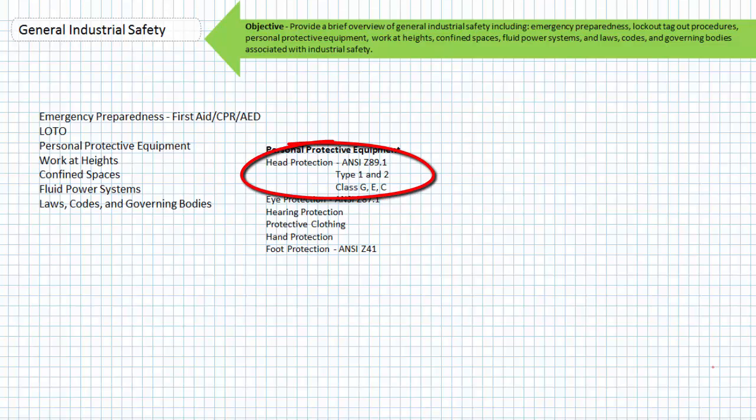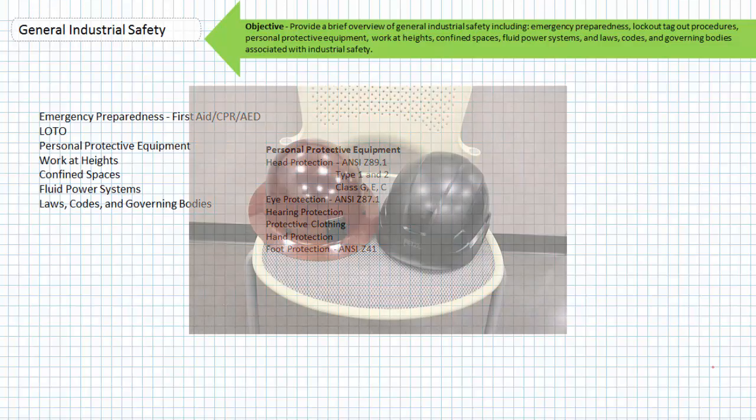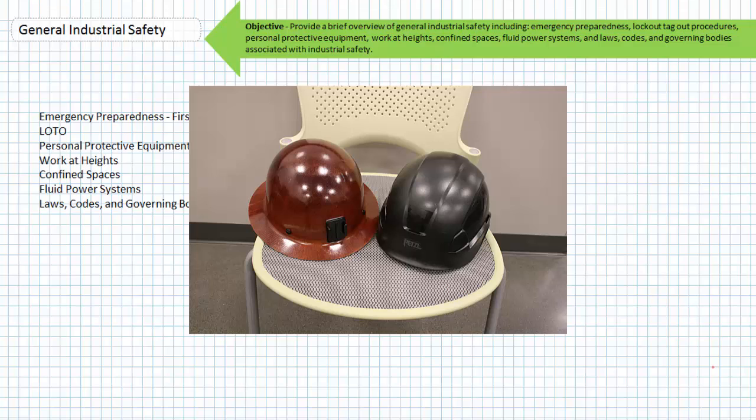Head protection. The hard hat's obvious purpose is to protect an individual from head injuries, notably dropped objects. The number one safety incident involving wind turbines is dropped objects. The standard that governs hard hats is ANSI Z89.1. Type 1 hard hats only protect against impacts to the top of the head.